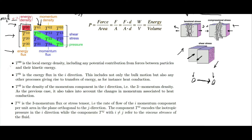T^00 is the local energy density, including the potential contribution from forces between particles and their kinetic energy — that's just matter. If we have some solid made out of atoms bound together, there is bonding energy between the different molecules. So T^00 is talking about all the energy that's in the matter.